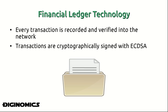It's essential for us to understand that the Bitcoin network and the blockchain represents a sort of financial ledger technology. Every transaction that takes place is transparently recorded into this ledger for essentially anyone to see, and every transaction is recorded and verified on this public network.